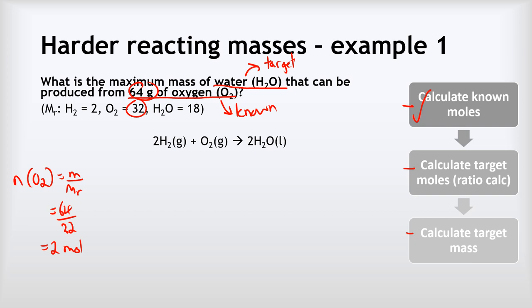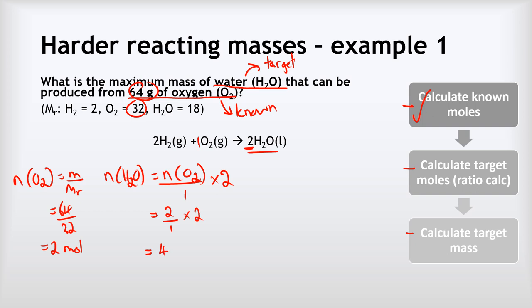Now we calculate the number of moles of water using our ratio calculation. The number of moles of H2O equals the number of moles of O2 divided by 1 — because there is one O2 in the equation — multiplied by 2 — because there are two H2O's in the equation. So 2 over 1 multiplied by 2 gives us 4 moles of water.